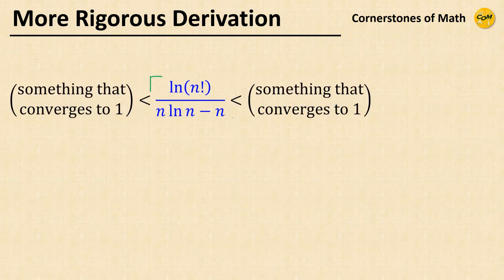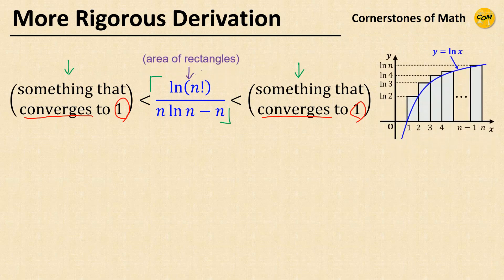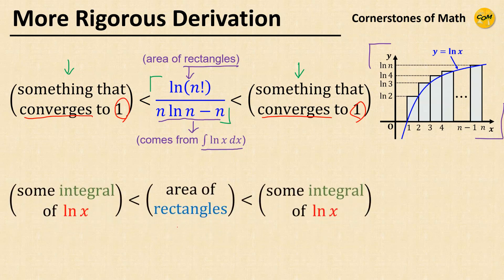So the basic scheme is to squeeze ln(n!) / (n·ln(n) - n) between expressions that both converge to 1 as n → ∞. The numerator ln(n!) comes from the area of rectangles, and the denominator n·ln(n) - n comes from the integral of ln(x). Therefore, if we can obtain inequalities where the area of rectangles is squeezed between definite integrals of ln(x), we can apply the squeeze theorem and prove the limit.